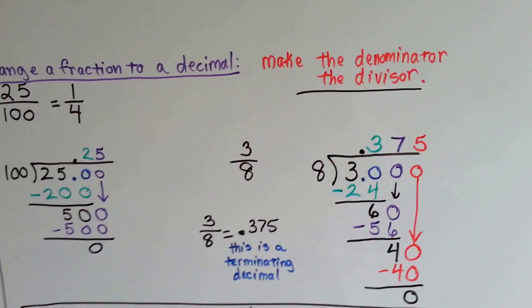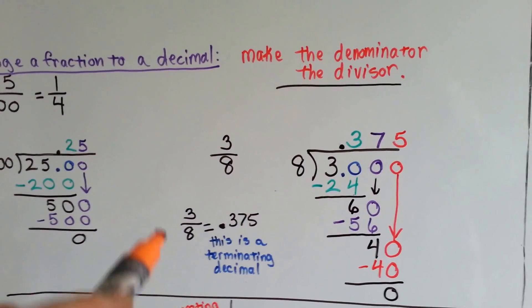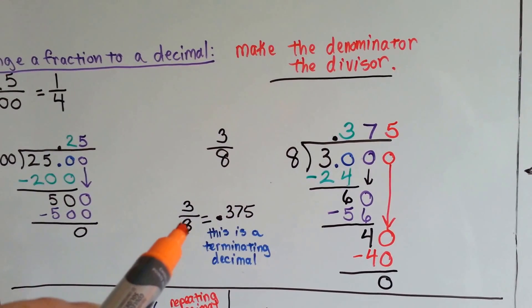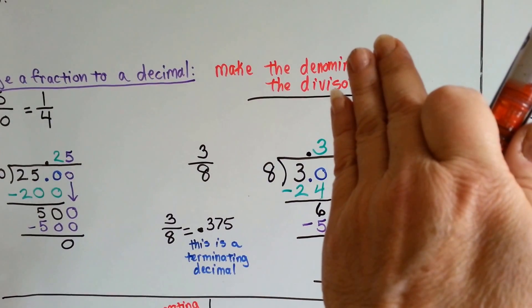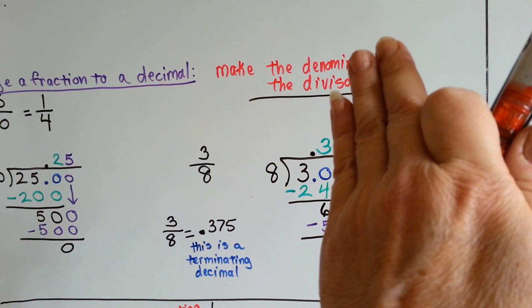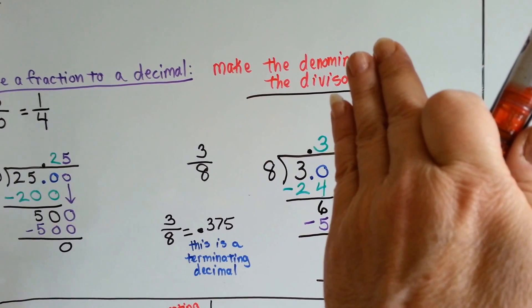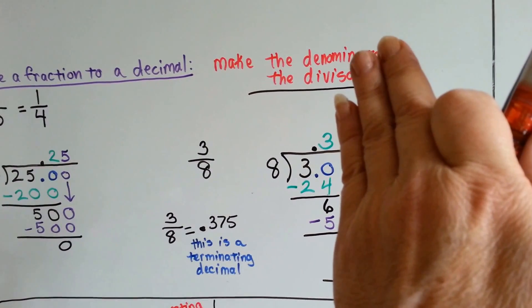Let's try it with three-eighths. We're going to make the denominator the divisor. So we're going to get the eight and put it into the three. And it won't fit, so we have to add a decimal point and a zero. Eight goes into thirty three times, that's twenty-four.